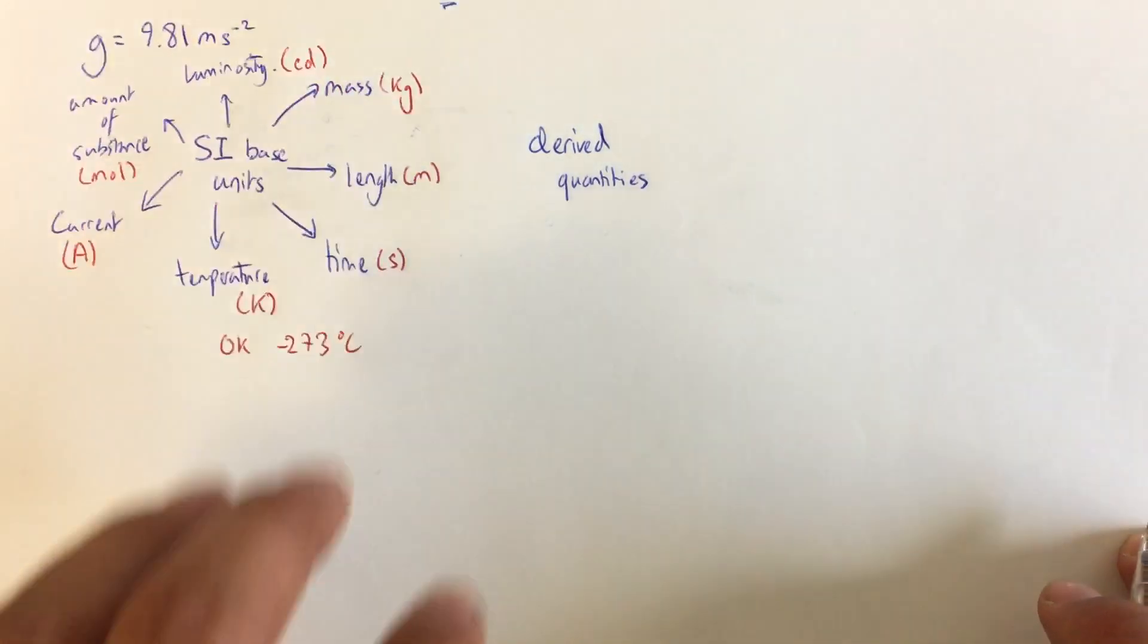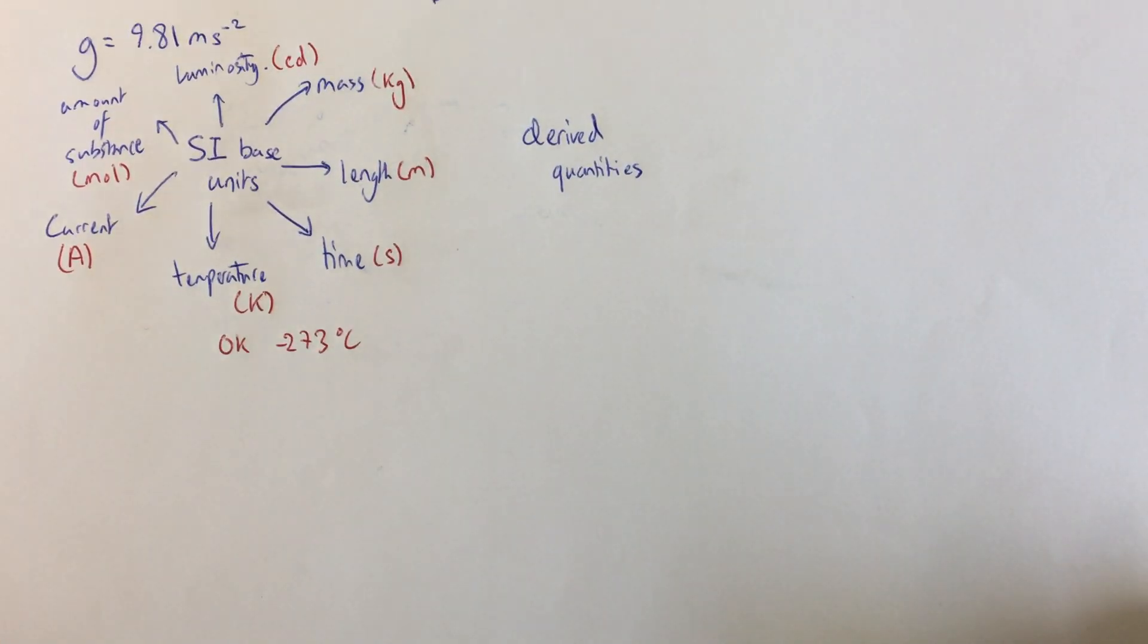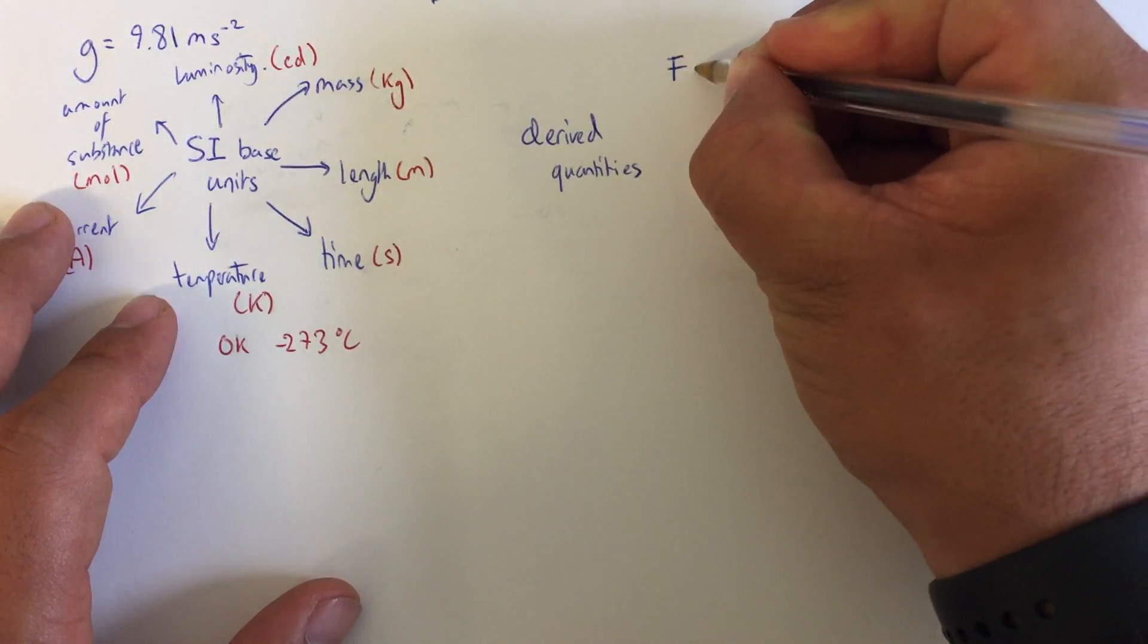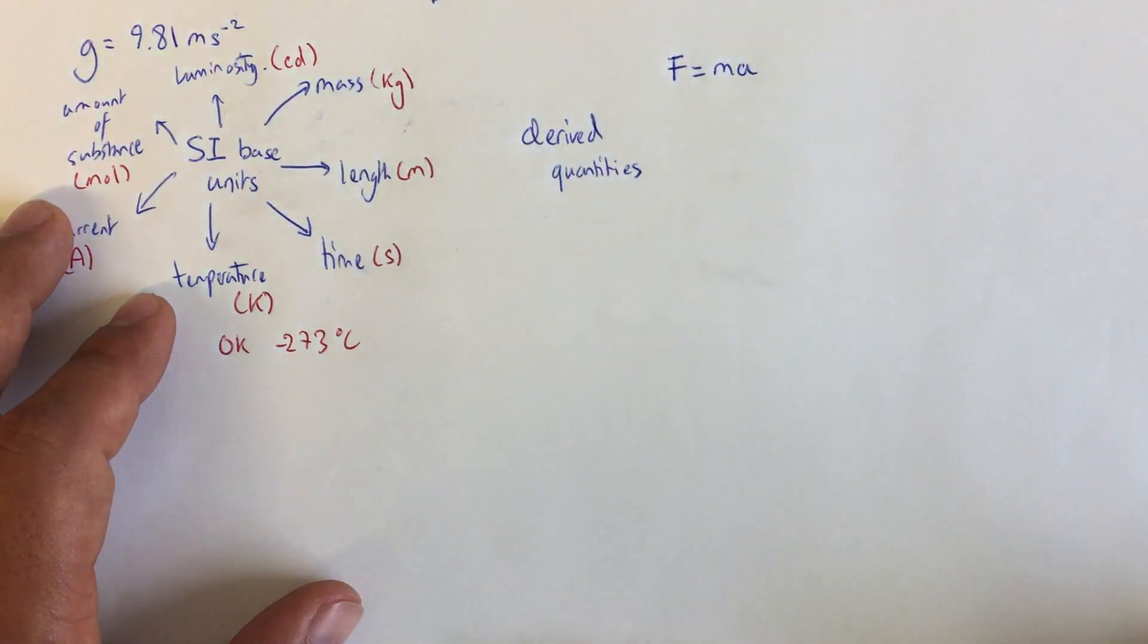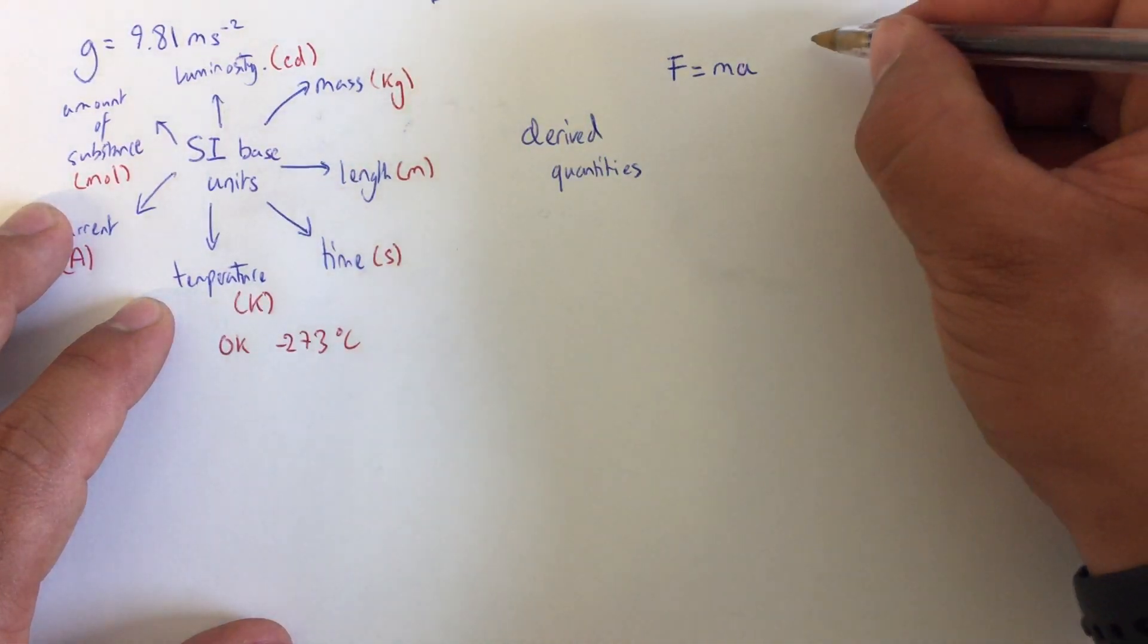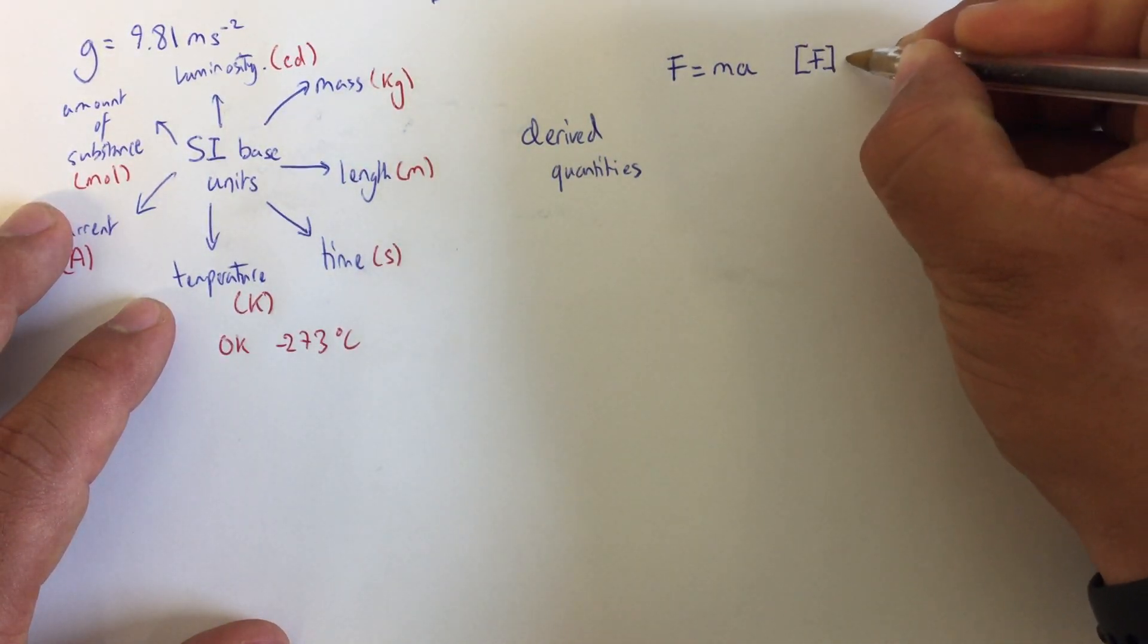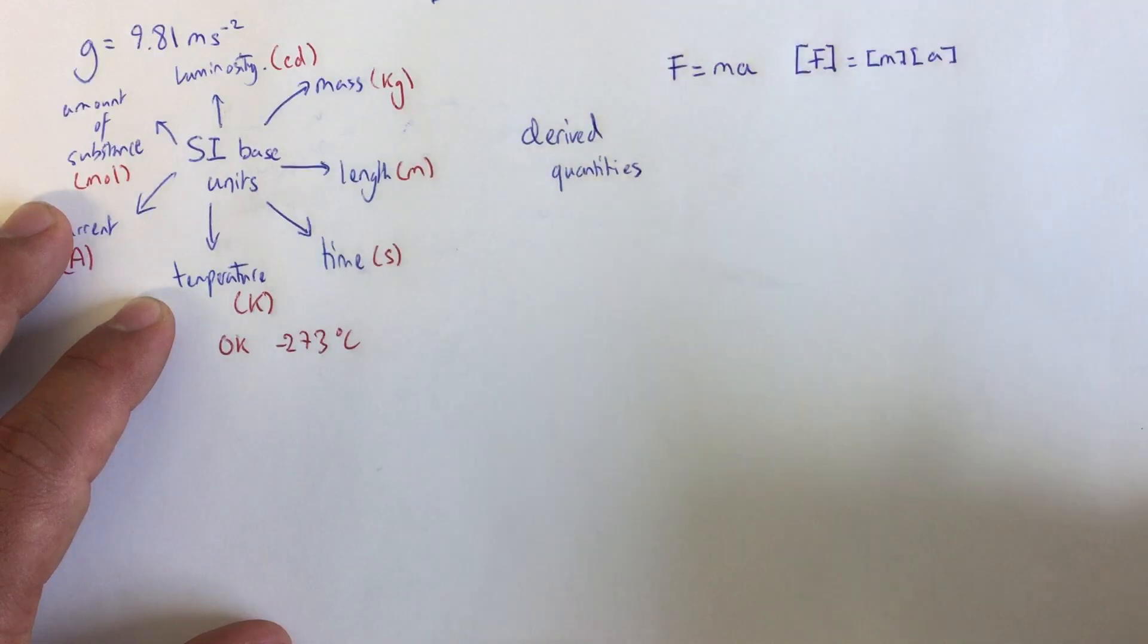From these quantities, any quantity that doesn't have one of these units has what we call a derived quantity. An example would be force. Force in the equation is mass times acceleration. So I can write this instead as the unit of force is the unit of mass times the unit of acceleration.